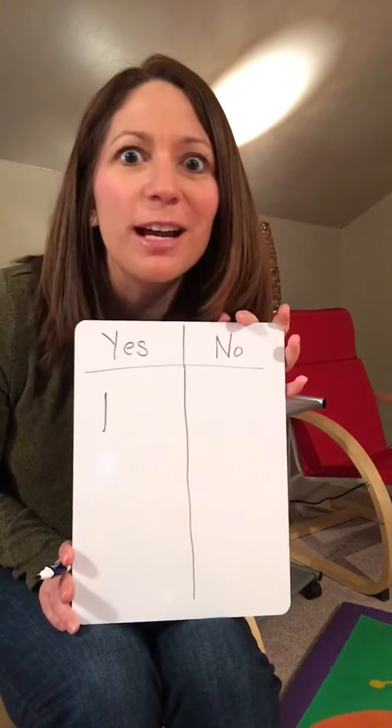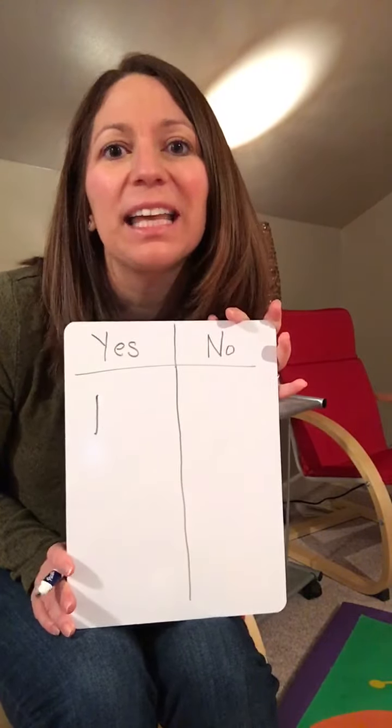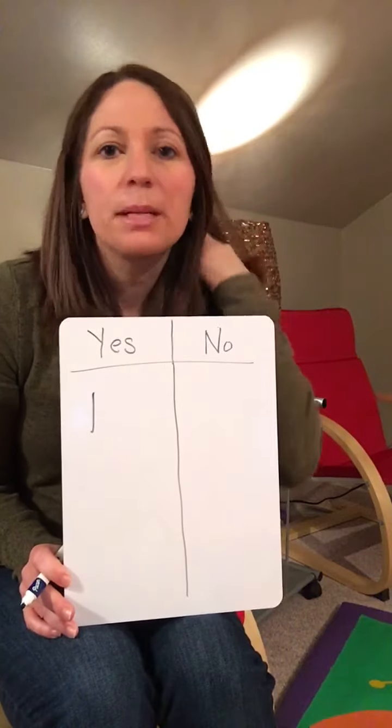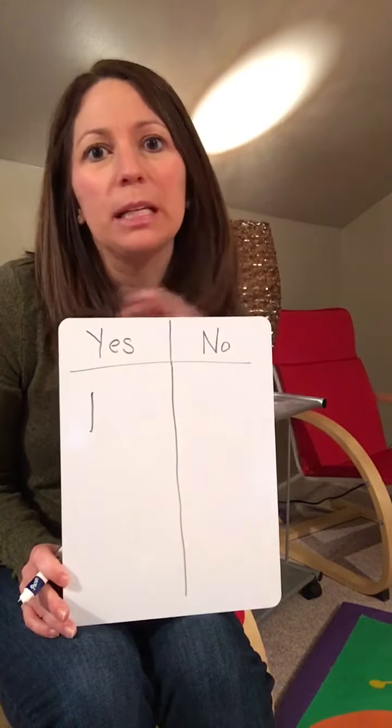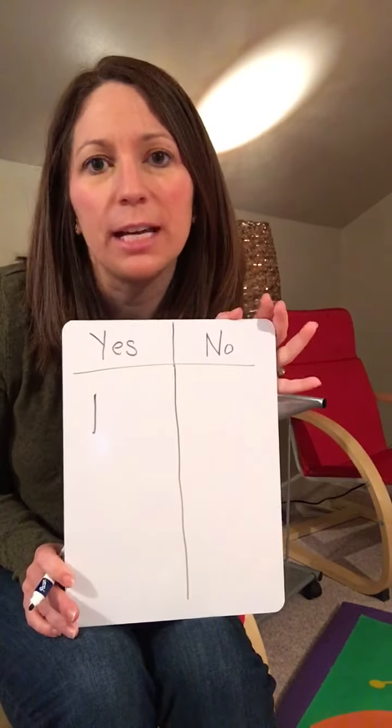We don't know about grouping five tallies together yet or anything like that, but it's just the beginning representation so they can count their data.